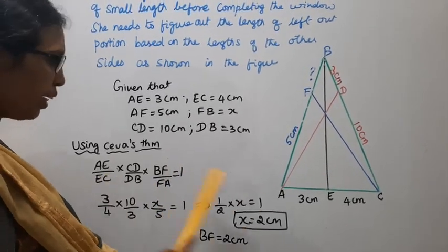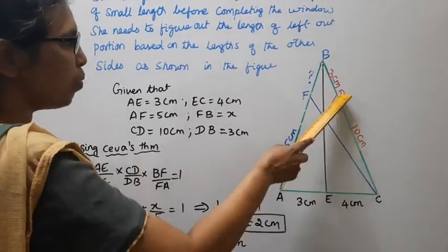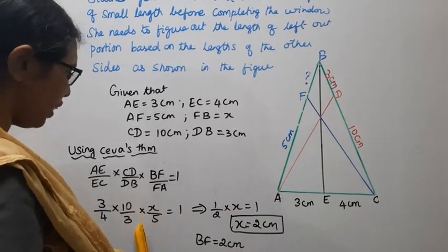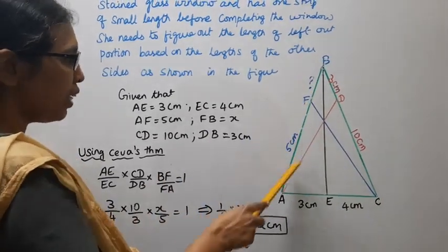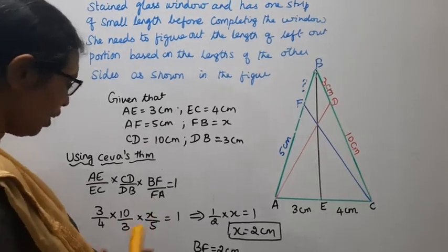Substituting the values: AE/EC = 3/4, CD/DB = 10/3, BF/FA = x/5.